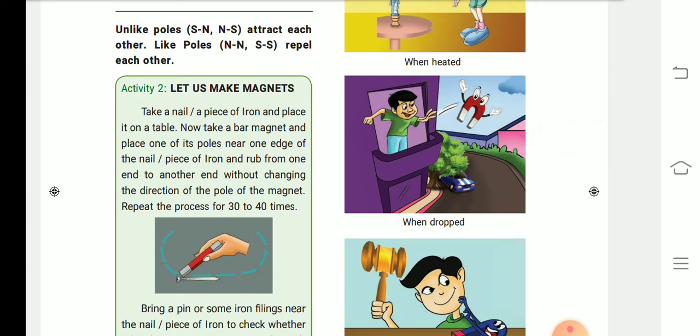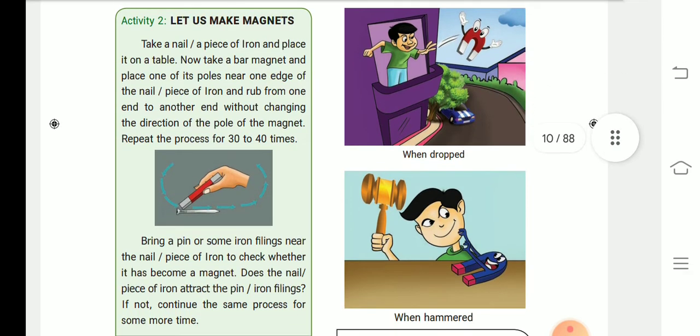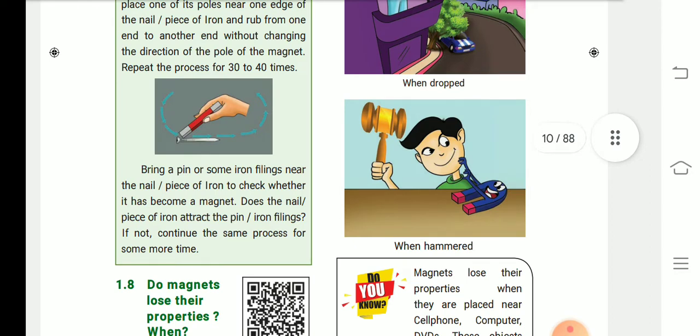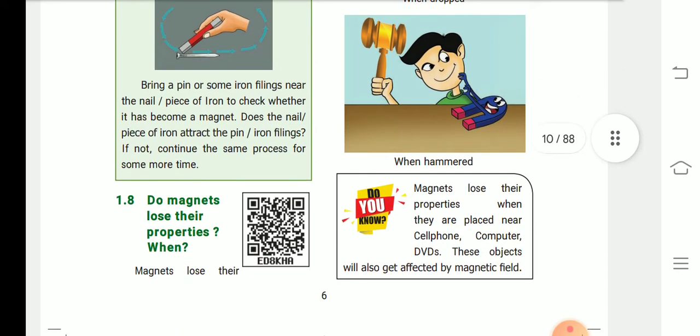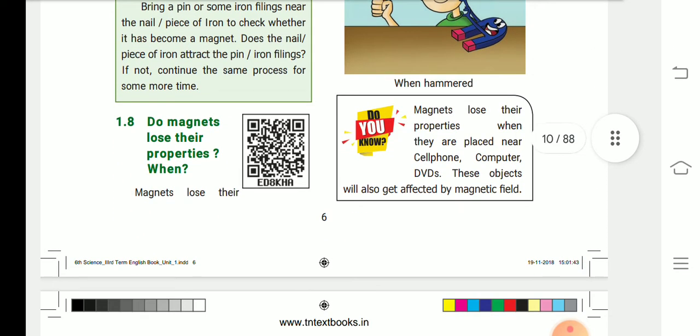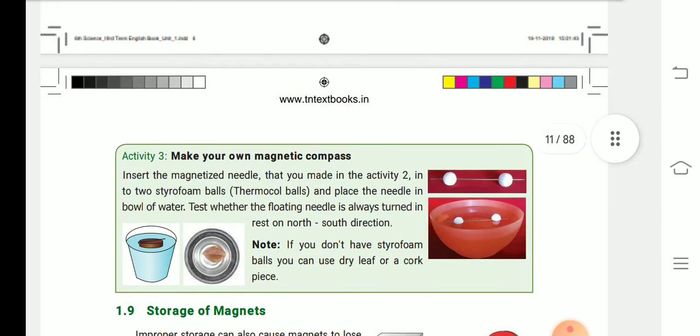Then, when dropped. When dropped, the magnet power will also be lost. The third one, when hammered. When you hammer the magnet, the attraction power will be lost. These are the ways magnets lose their properties.